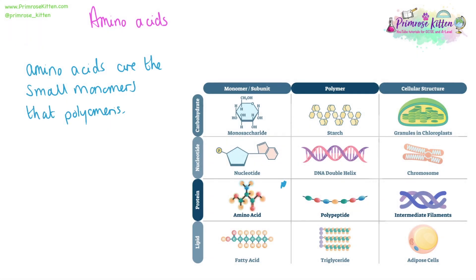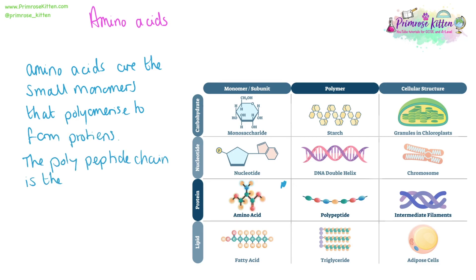Amino acids are the small monomers that can polymerize to form proteins. When amino acids polymerize, the polypeptide chain — the polymer — is the protein chain.